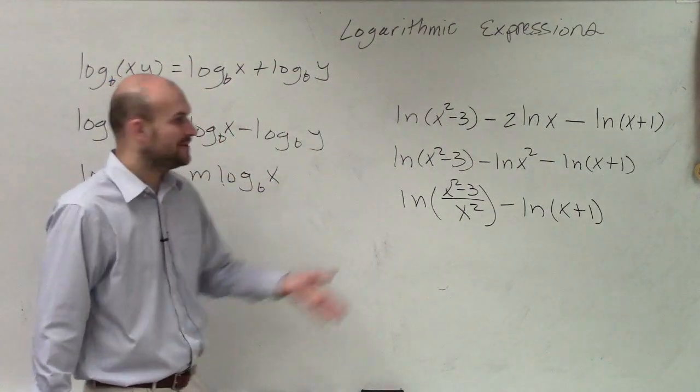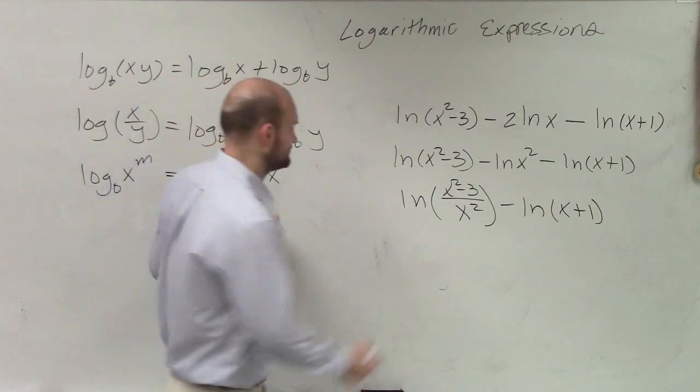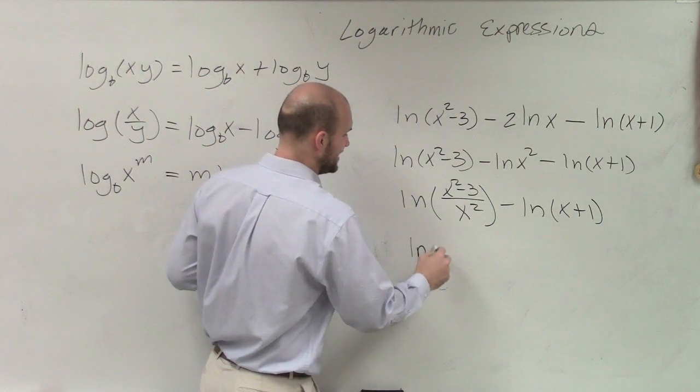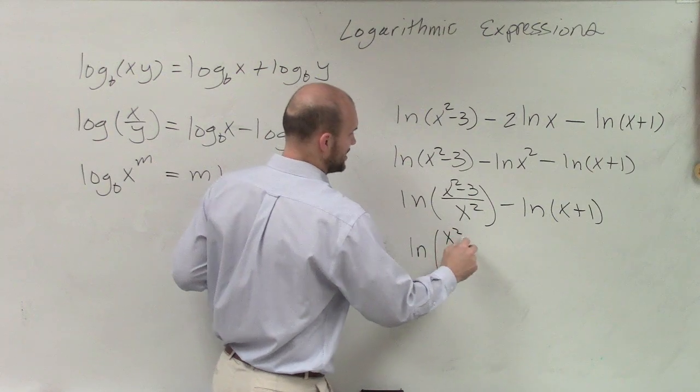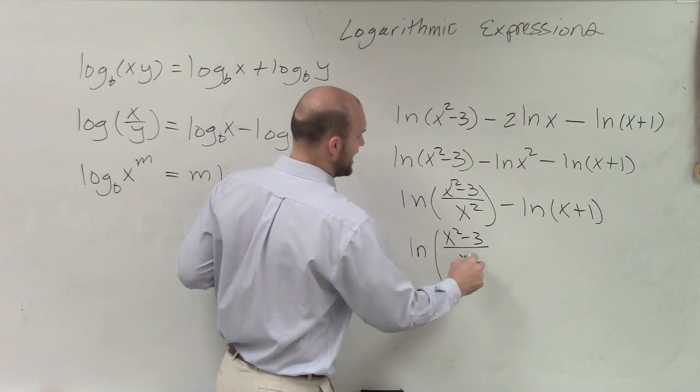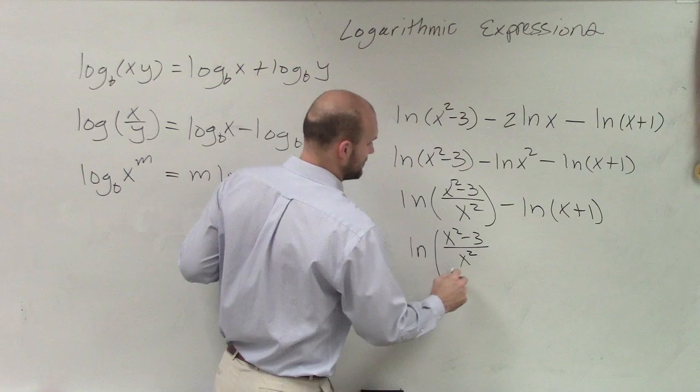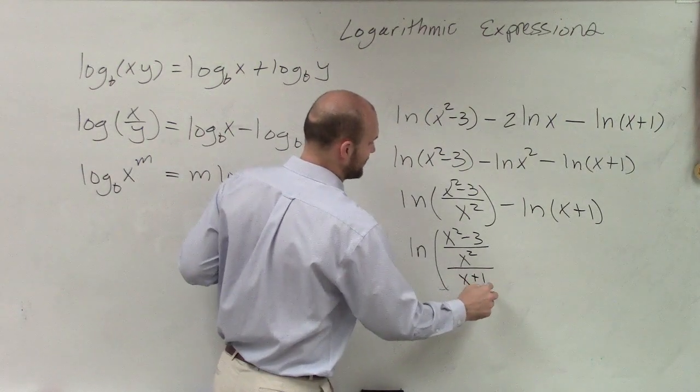So now, we've got to divide this again. Yes? So now it's ln of x squared minus 3 divided by x squared divided by x plus 1.